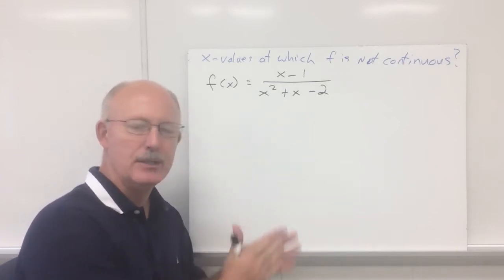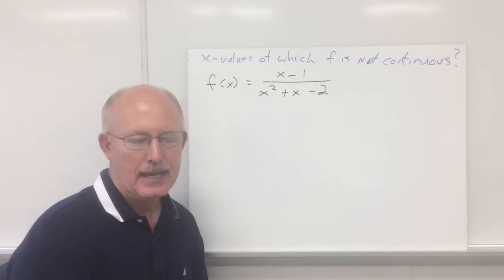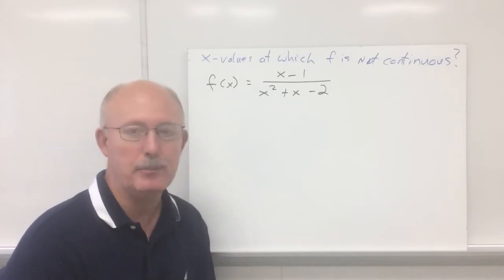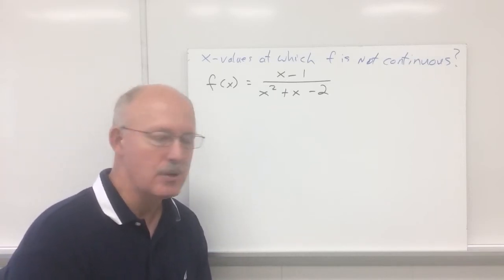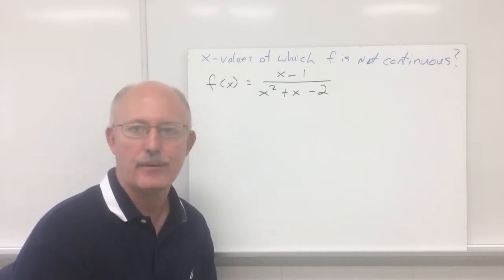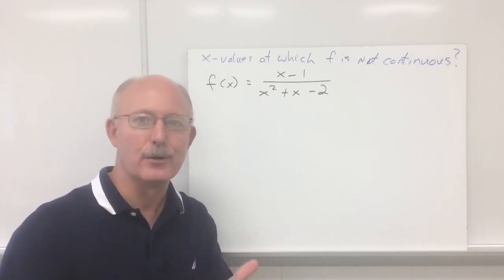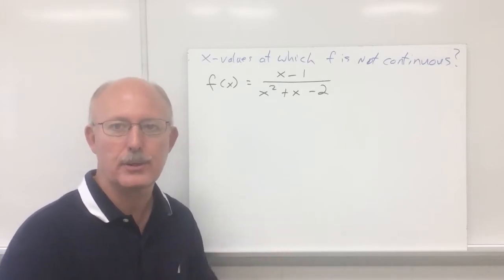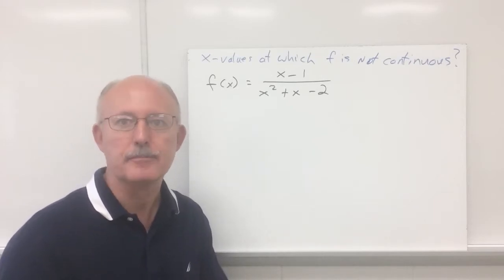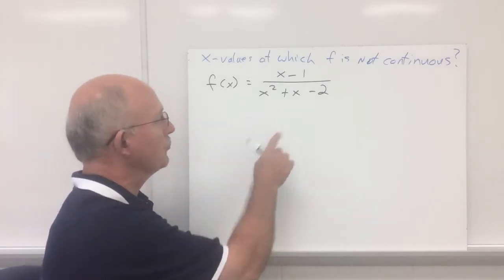Now if the function is not continuous, this type of function, there are two possibilities. Either the graph has a hole in it — now if it's got a hole we can get rid of it, but in any event that would be an x value at which it would not be continuous. Or the graph could have a vertical asymptote, and you can't get rid of a vertical asymptote. The third possibility is that the graph has both a hole and a vertical asymptote. Now first, to see if it has a hole, we've got to factor it, and then from there you can recognize the hole.